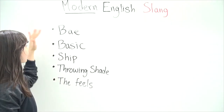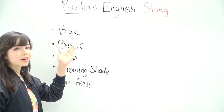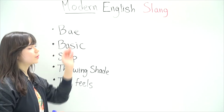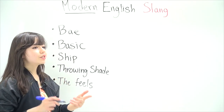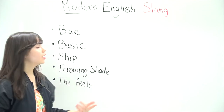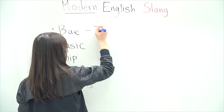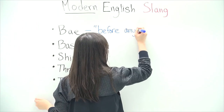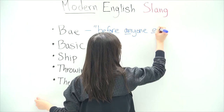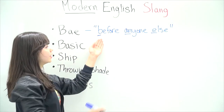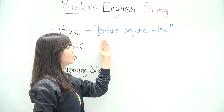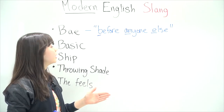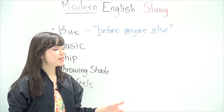The first one, and I think this might be the most popular one, is 'bae.' This came out maybe about two years ago, so most of you might know what it means. You can usually exchange it or use it instead of 'baby' or 'sweetie,' but actually what it means is 'before anyone else' — B from before, A from anyone, E from else. A lot of times people now use it in America instead of saying baby or sweetie to their boyfriend or girlfriend.